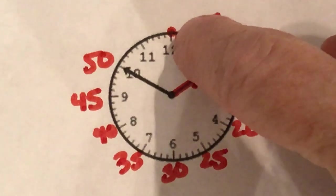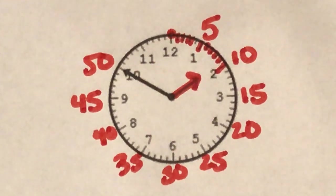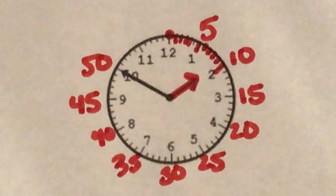So again boys and girls you could have counted by ones but you might have made a mistake and it would have taken a lot longer. Skip counting by the fives was much quicker.